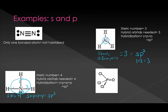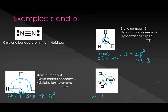A couple more examples. Here we have POCl3. We look at its steric number: four bonded atoms. Remember, when counting steric number, a double bond counts as one. So the steric number equals four. That means we have an s orbital and we need three p orbitals, leaving us with sp3 hybridization.